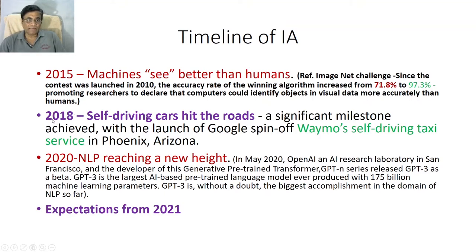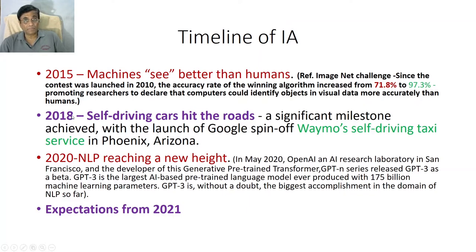Then in 2018, another milestone: self-driving cars hit the road. This is a very significant milestone achieved by a Google spin-off company, which ran a self-driving taxi service in Fernings, Arizona. These are all breakthroughs.